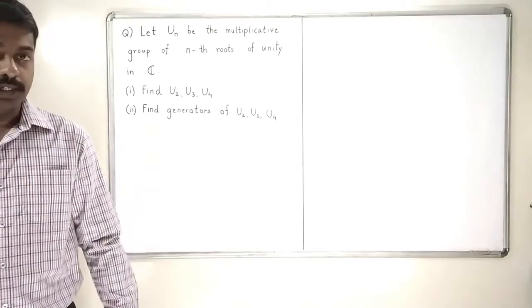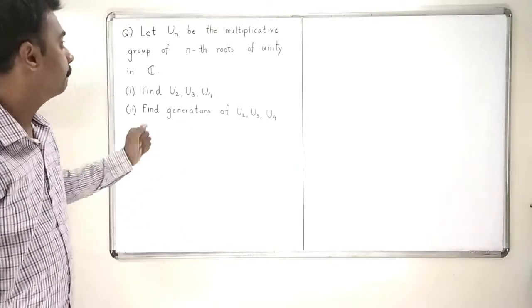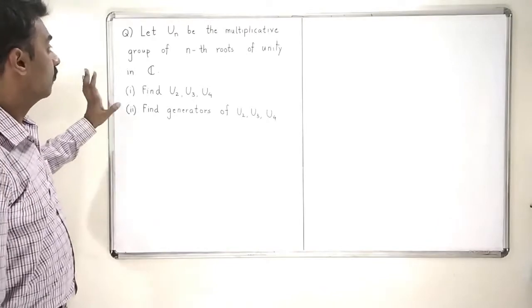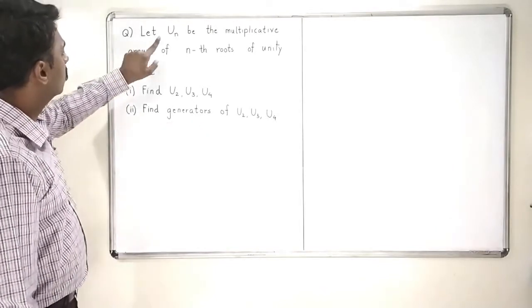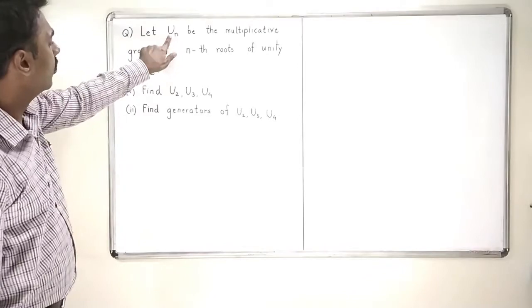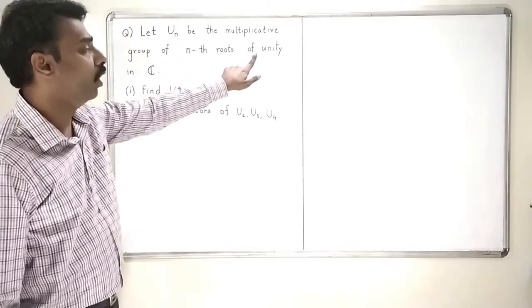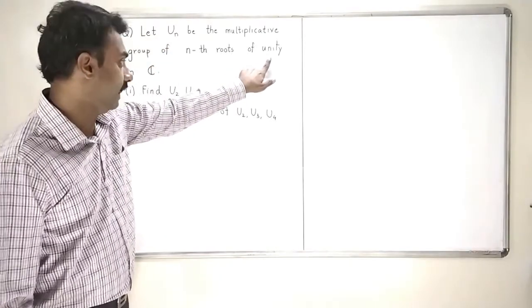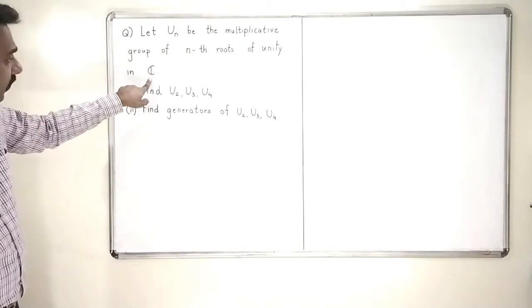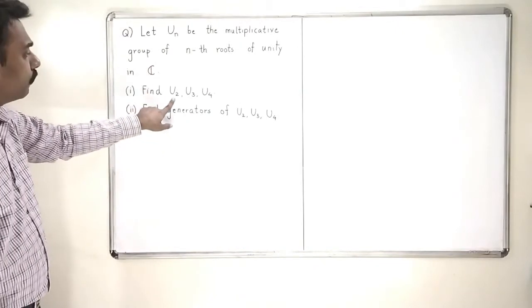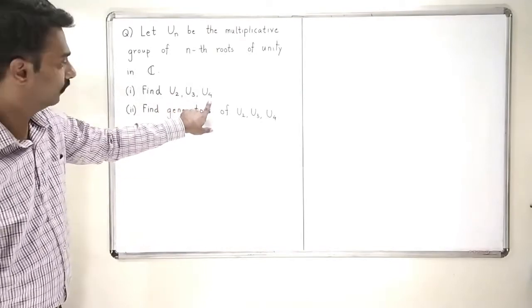Let us go to one interesting example. I am calling Un as a group of nth roots of unity in the complex plane. We have to find U2, U3, and U4.